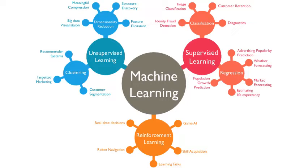Let's start with supervised learning. What's the difference between supervised learning and unsupervised learning? The difference is that supervised learning has a teacher. The teacher will provide the answers of the training data. So supervised learning requires labeled data — we also call the answers labels in machine learning.